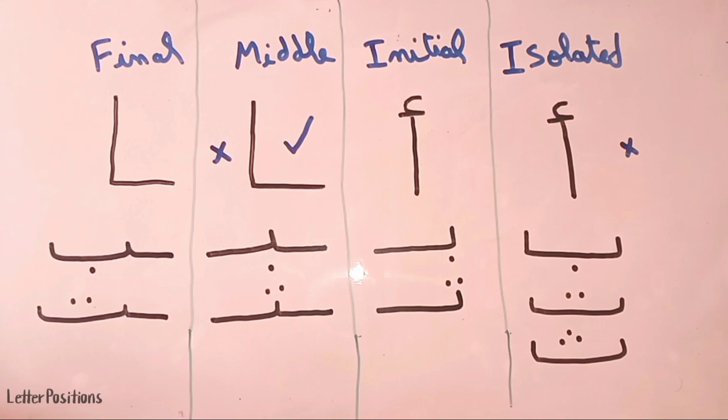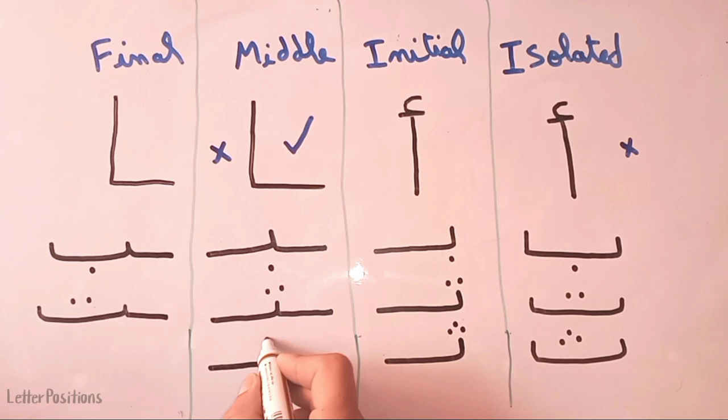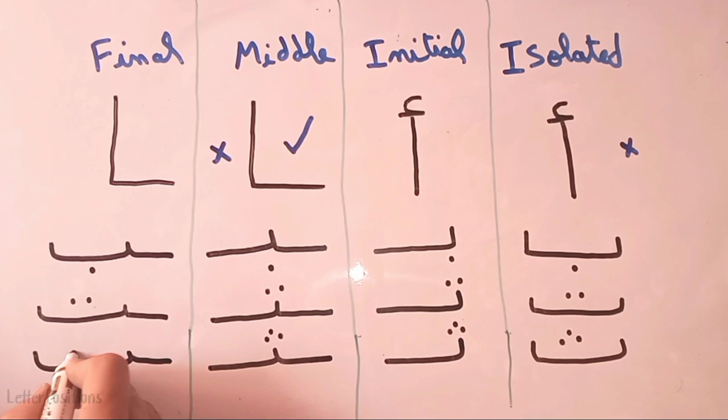Now the next letter is harfu al-tha'. Same shape — start from here, go straight with three dots on the top. In the middle form, we go up and go straight with three dots on the top. Same thing in the final form — three dots on the top.